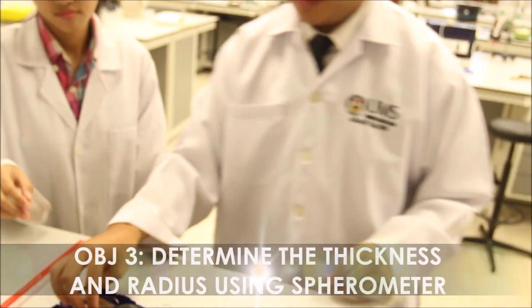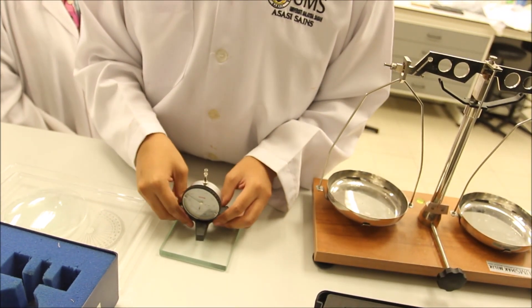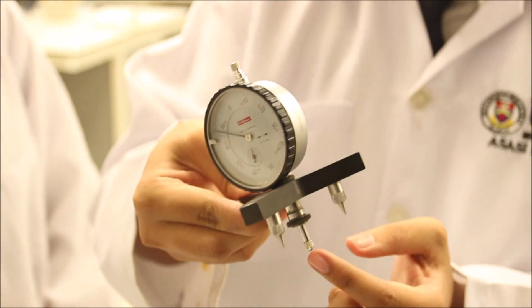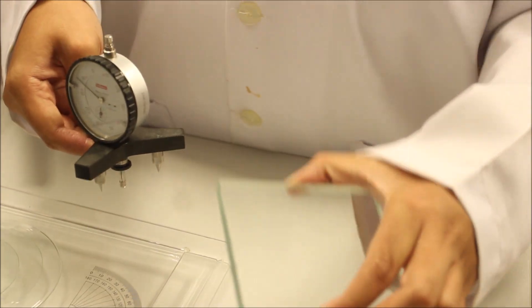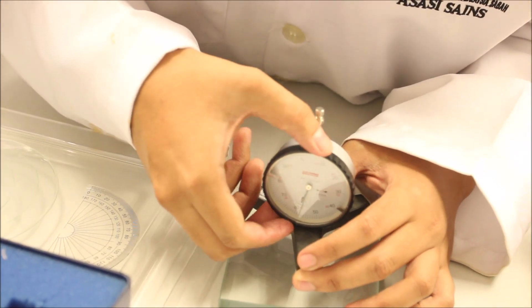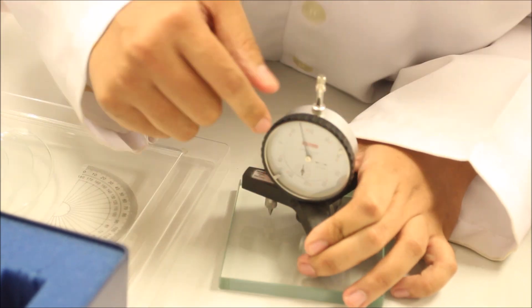Let's proceed with the third objective. This is called spherometer. It consists of three static legs and one movable leg in the middle. And then the reading here is shown at the dial gauge. Before we use spherometer, we must make sure that this spherometer is free from zero error. So to calibrate it, first we put it on flat surface.